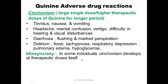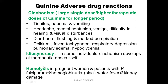In some patients, cinchonism can develop even at normal therapeutic doses — this is called idiosyncrasy, which you have learned about in general pharmacology. Hemolysis can occur with quinine in pregnant women and patients with Plasmodium falciparum. Because of the hemolysis, hemoglobinuria can occur — this is called black water fever — and this can lead to kidney damage. It is highly fatal.